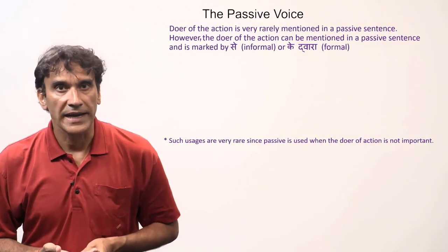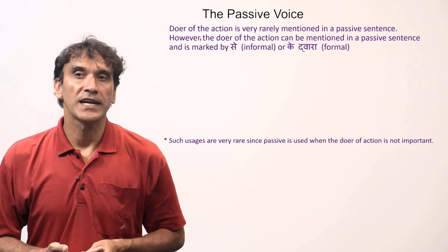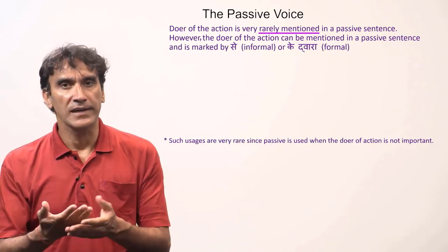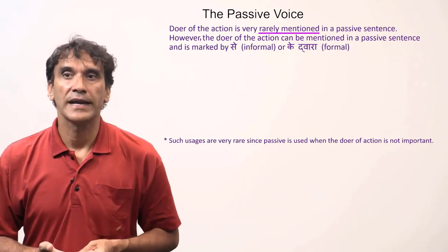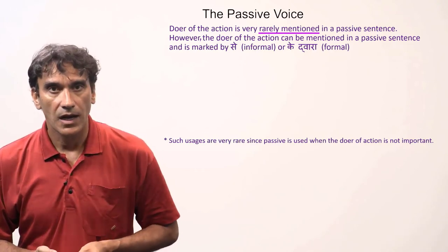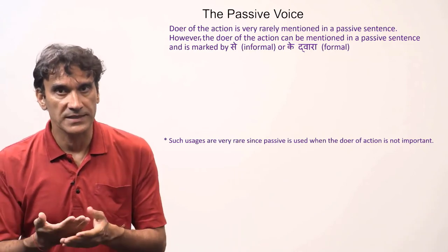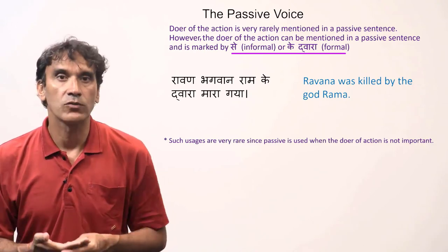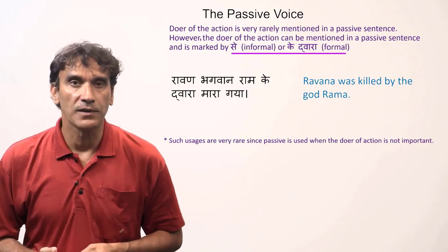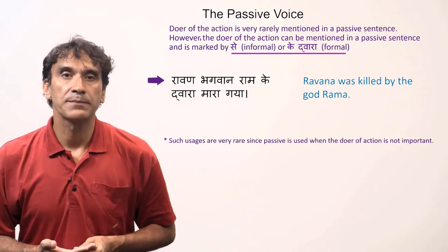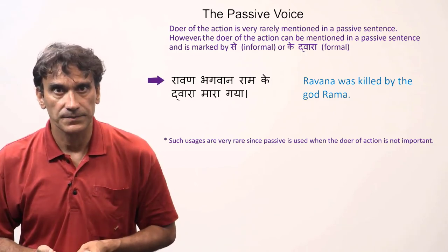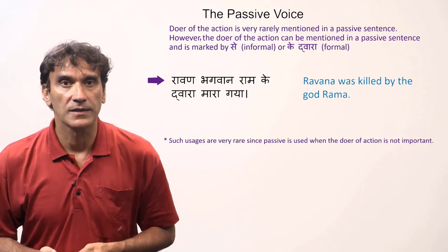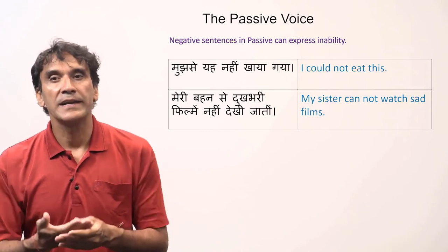In passive sentences, the doer of the action is either general or not important, so the doer is very rarely mentioned. If the doer is important, an active sentence is used. However, the doer can be mentioned in a passive sentence, marked by the postposition 'se' (informal) or 'ke dwara' (formal). Here is the classical example: 'Ravan Bhagwan Rama ke dwara mara gaya' — Ravana was killed by God Rama.